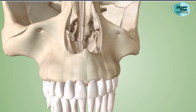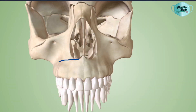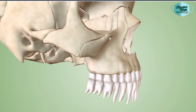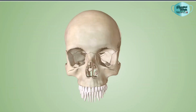Now we will see the fracture line from the anterior aspect. This is how the fracture line extends on the right side and over the left side. This is how the fracture segment will appear from the anterior aspect. The fracture line extends from the anterior nasal aperture towards the lower one-third of the pterygoid lamina posteriorly, and here is the highlighted segment of the fracture.